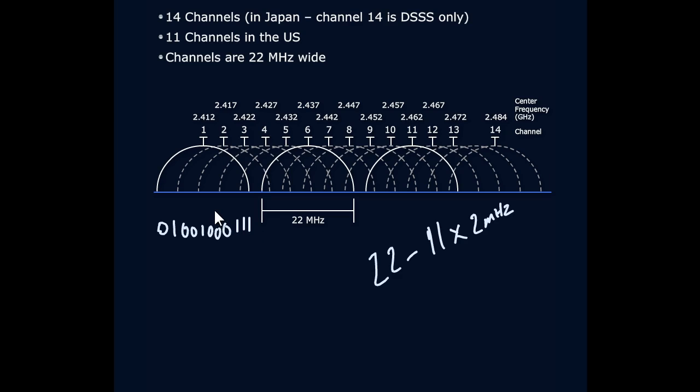We need to convey that information. So every one of those bits is 2 megahertz wide. So we end up dividing this channel up into 11 subsections. There's 11. Every one of those subsections, subchannels is essentially sending out one bit.